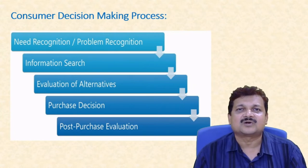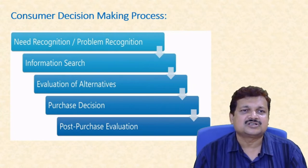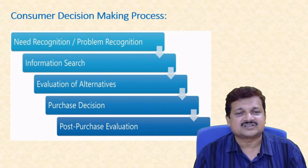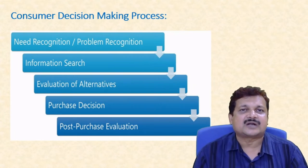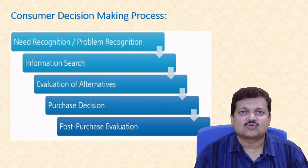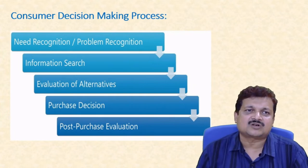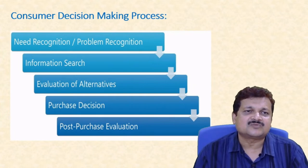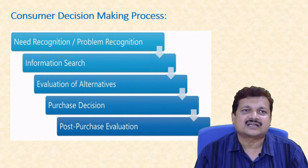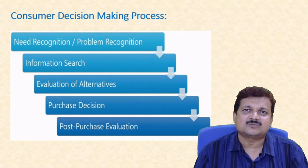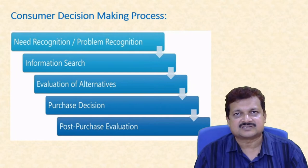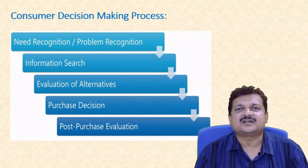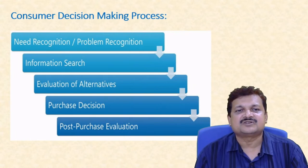Information search begins with internal sources — brands already stored in your memory — and then external sources for information you are lacking. You verify what new brands have entered the market and compare them with brands you already know to determine which is a better option. This comparative analysis leads to the next stage: evaluation of alternatives.